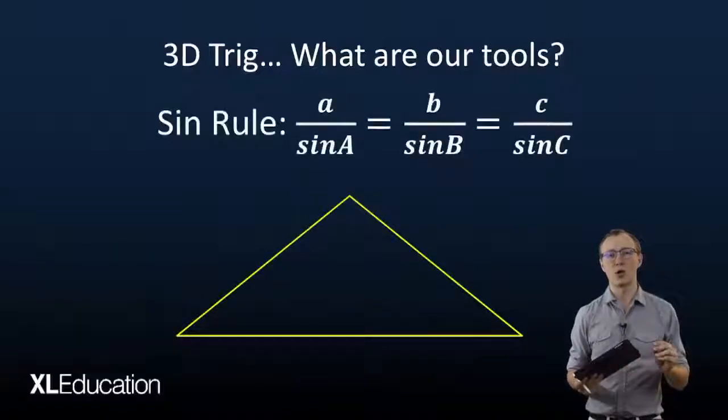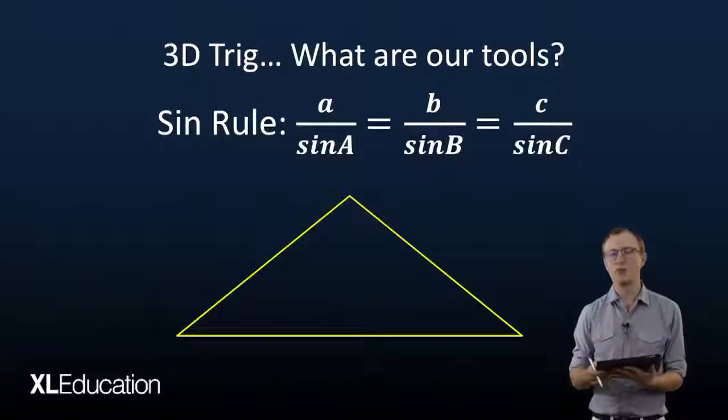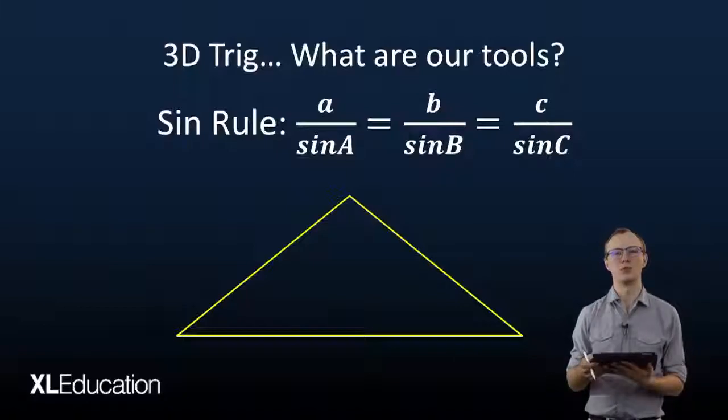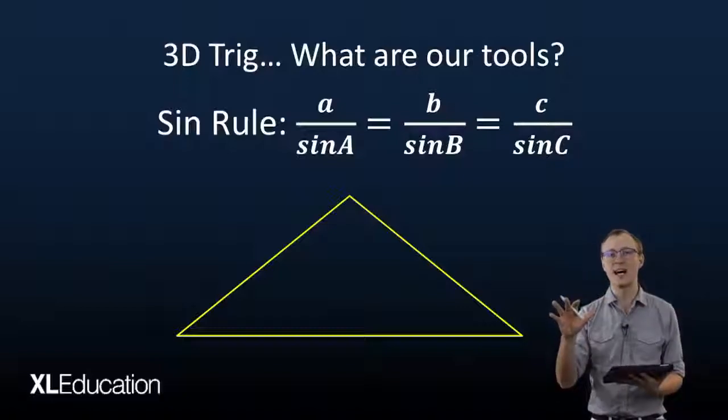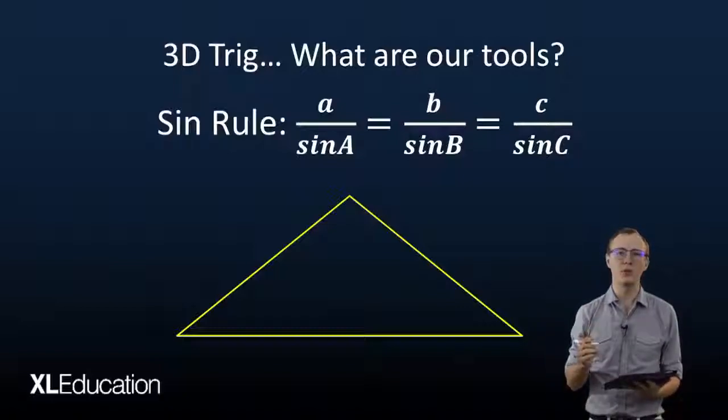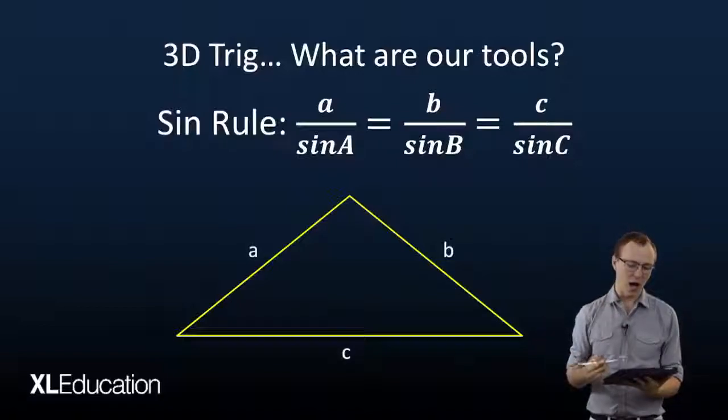First up we've got the sine rule, and the sine rule I like to call the couples rule. Why? Because we are looking for an angle and side couple. So a couple is an angle and a side that are across from each other.